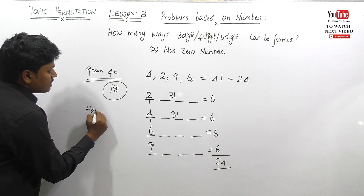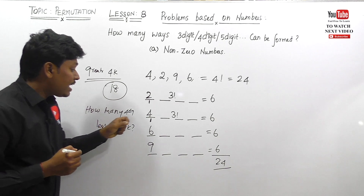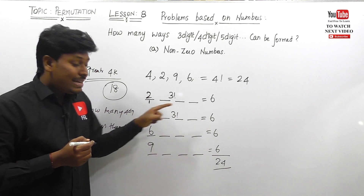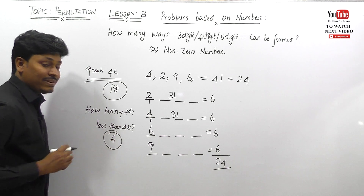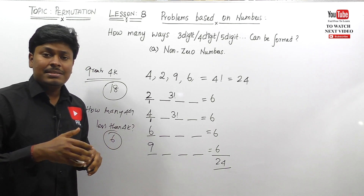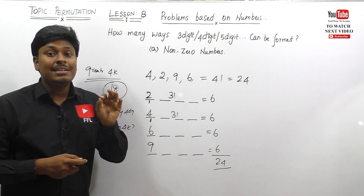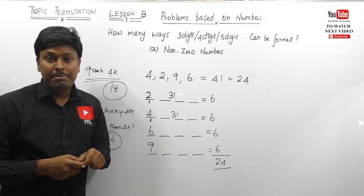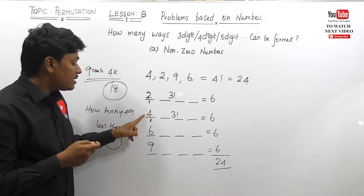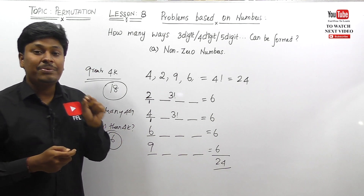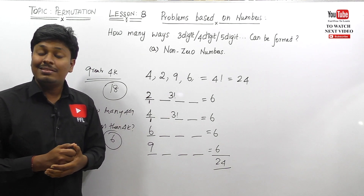How many four-digit numbers are less than 4000? Only the 2000-range qualifies, so the answer is 6. If asked how many are greater than 6000, only the 6000 and 9000 ranges count: 6 + 6 = 12. If asked how many are less than 6000, only the 2000 and 4000 ranges count — do not include the 6000 range itself — so the answer is 6 + 6 = 12.